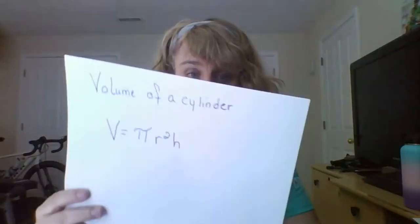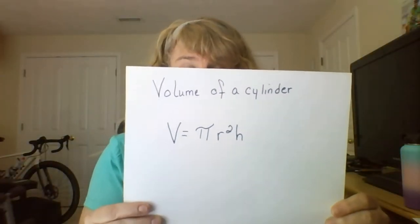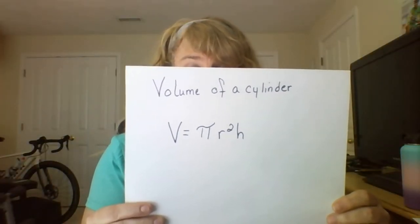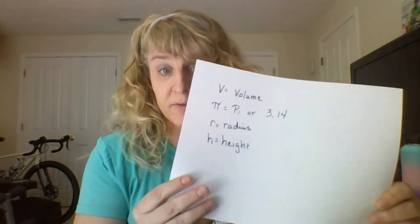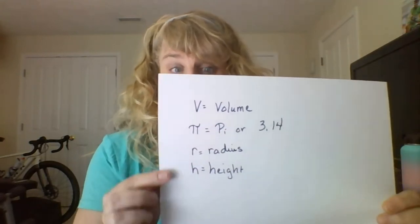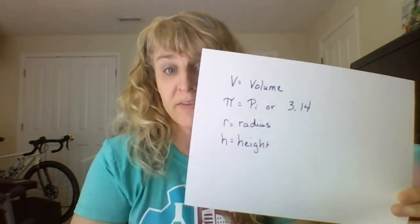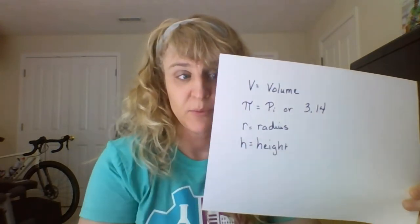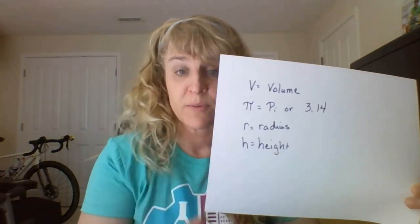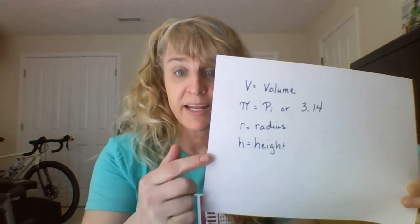Let's start with the basics — how do we calculate the volume of a cylinder? The formula is volume equals pi r squared h. V stands for volume, that symbol is pi which we give a value of 3.14, r is the radius, and h is the height.